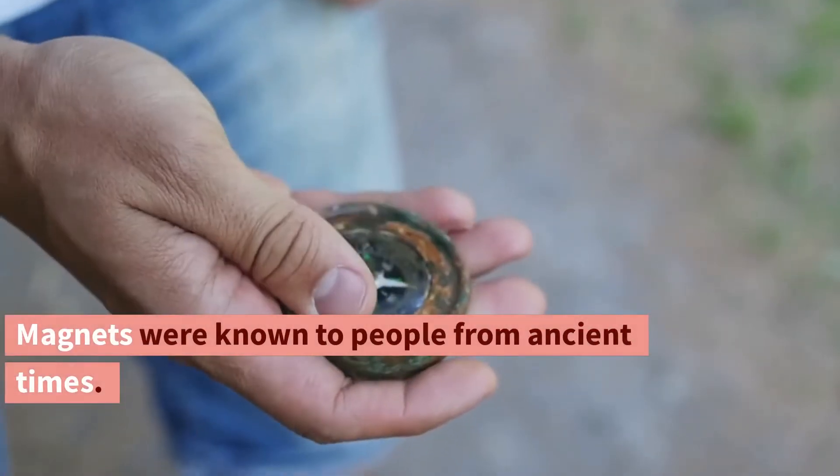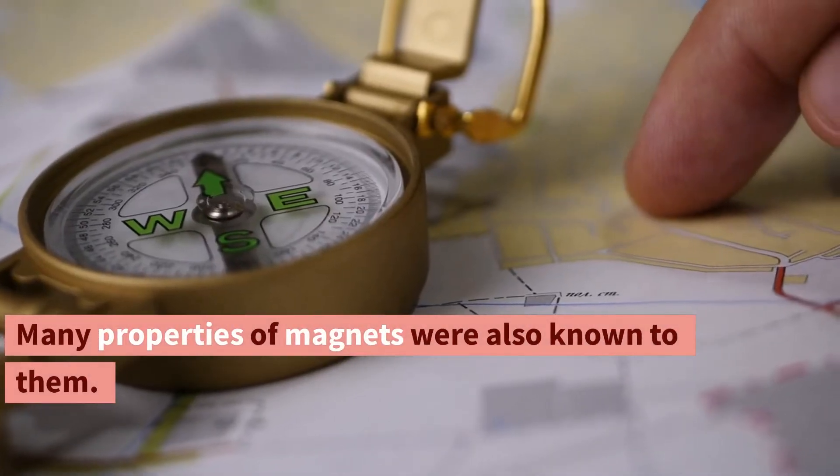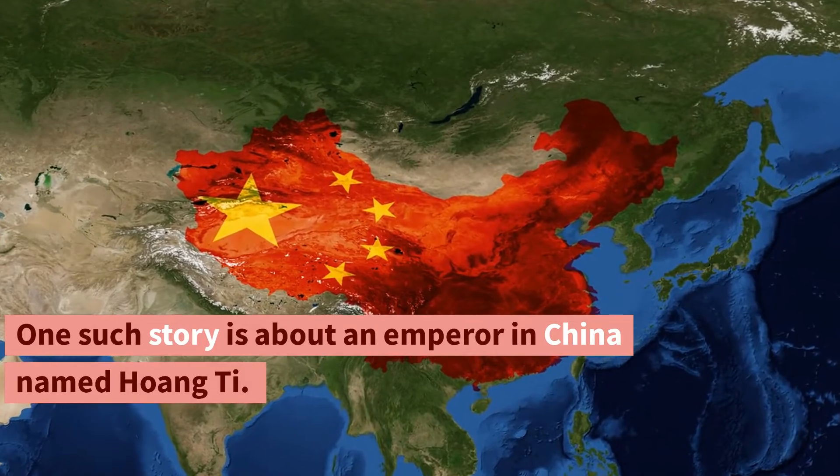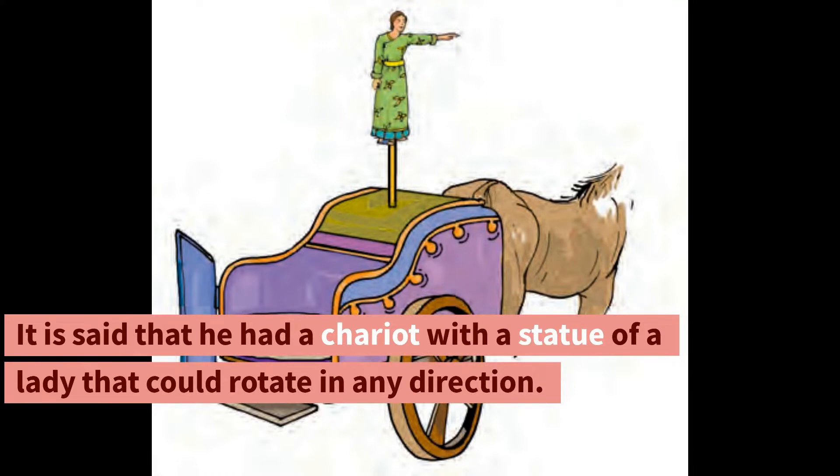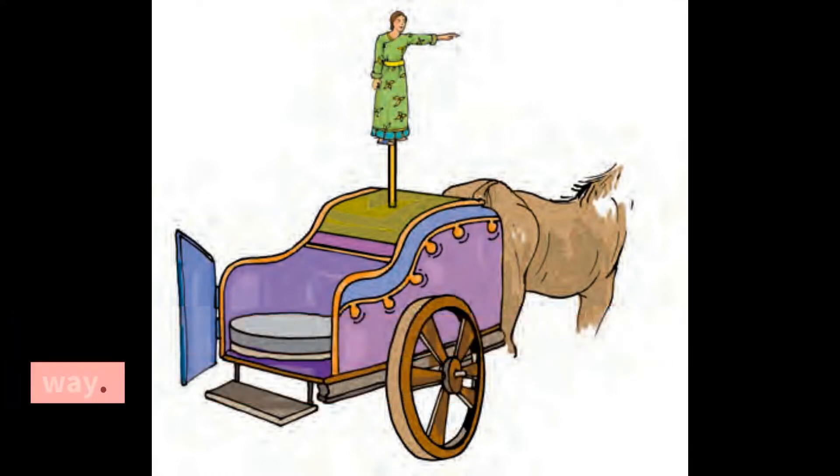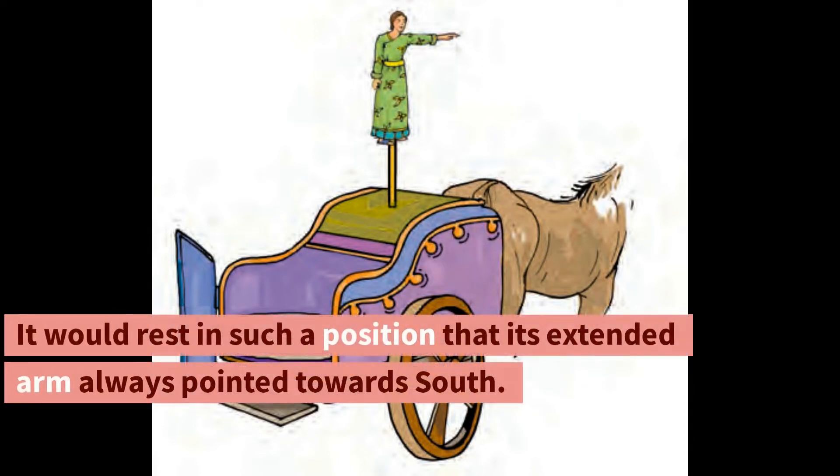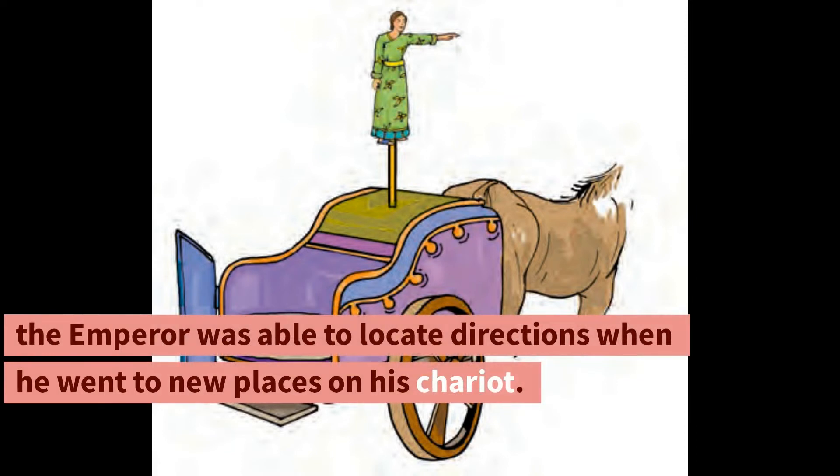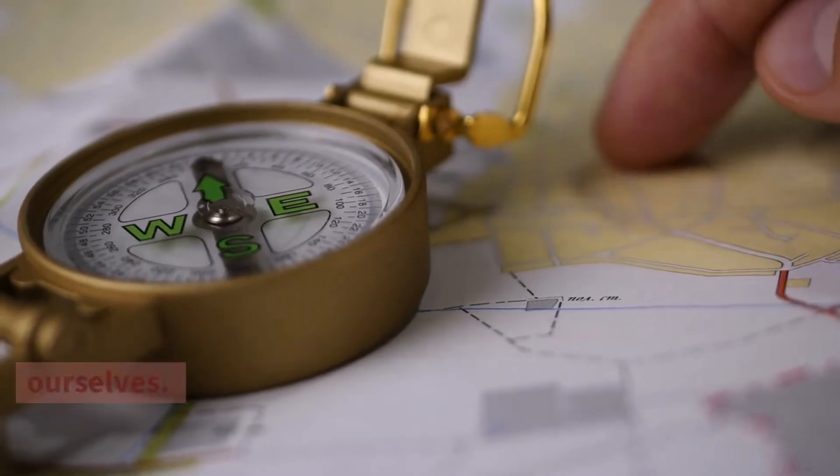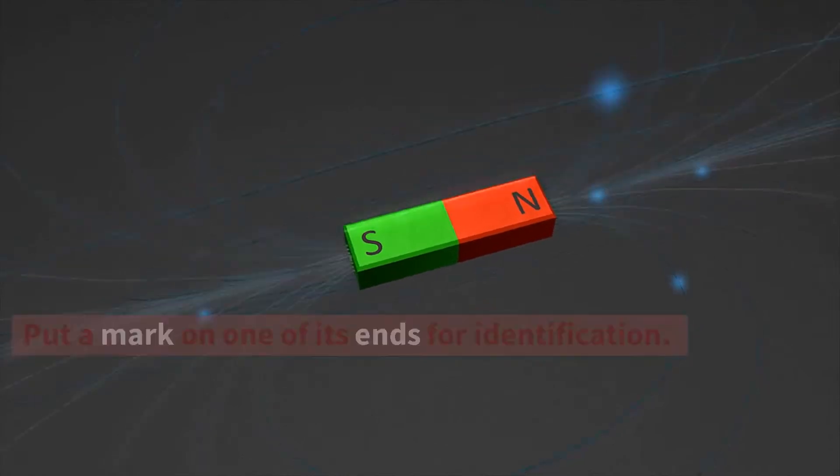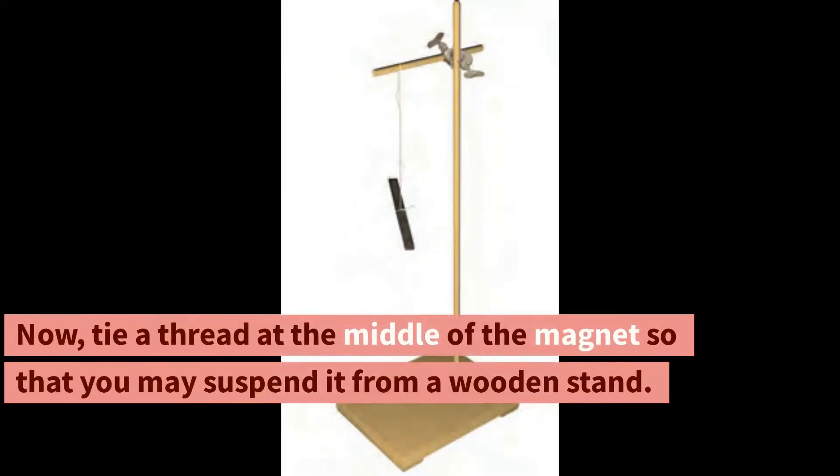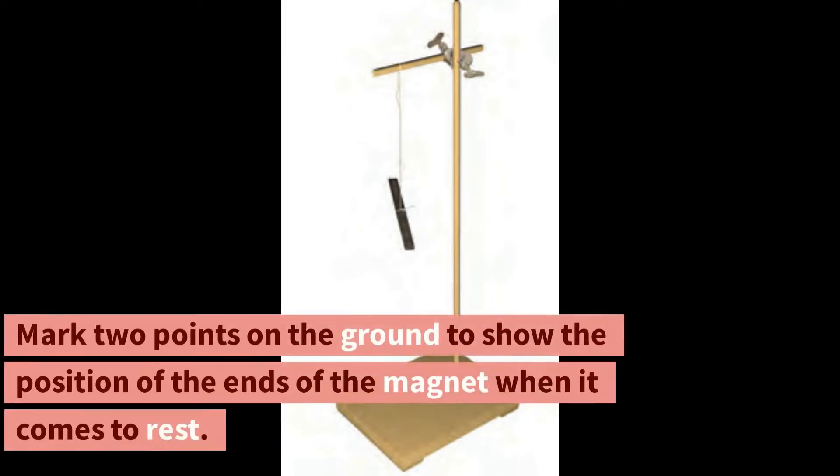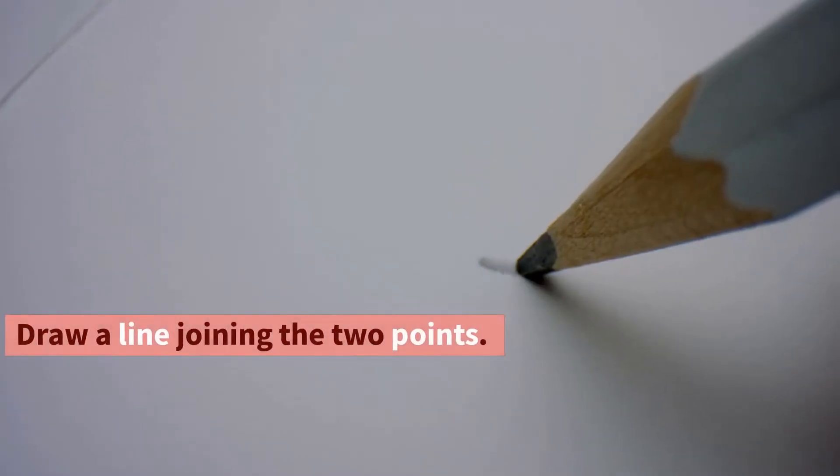Finding directions. Magnets were known to people from ancient times. Many properties of magnets were also known to them. You might have read many interesting stories about the uses of magnets. One such story is about an emperor in China named Hoangti. It is said that he had a chariot with a statue of a lady that could rotate in any direction. It had an extended arm as if it was showing the way. The statue had an interesting property. It would rest in such a position that its extended arm always pointed towards south. By looking at the extended arm of the statue the emperor was able to locate directions when he went to new places on his chariot. Let us make such a direction finder for ourselves. Activity 5. Take a bar magnet. Put a mark on one of its ends for identification. Now tie a thread at the middle of the magnet so that you may suspend it from a wooden stand. Make sure that the magnet can rotate freely. Let it come to rest. Mark two points on the ground to show the position of the ends of the magnet when it comes to rest. Draw a line joining the two points.